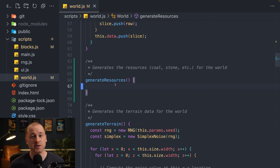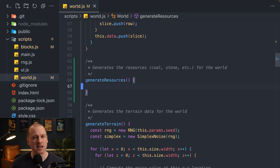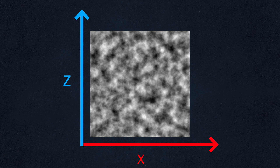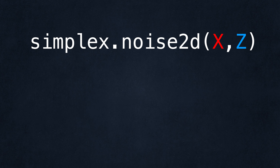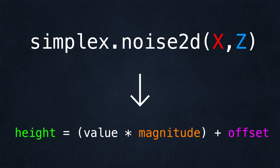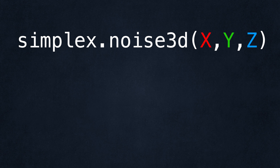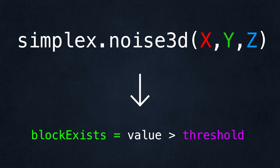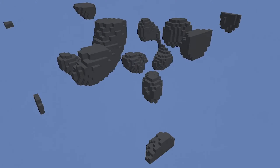To begin with, I'm going to hide our terrain because it will obscure the resources we're generating. We'll need a new function called generate resources, defined right before generate terrain. Generating resources is similar to terrain generation, with the key difference that we use 3D noise instead of 2D noise. With 2D noise, x and z coordinates determine terrain height. With 3D noise, we compute a noise value at each x, y, and z coordinate, and threshold those values to create pockets of resources — anything above the threshold becomes a block.